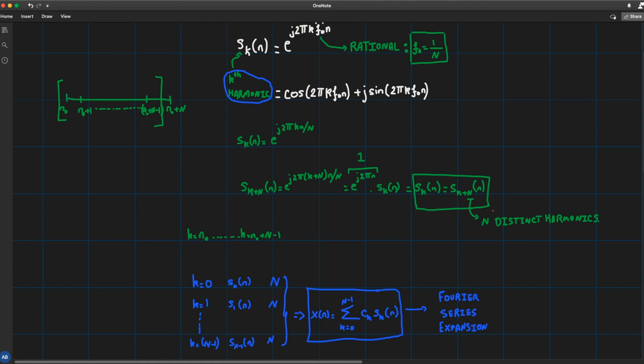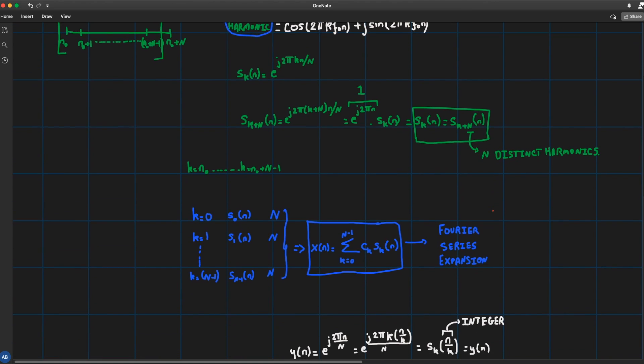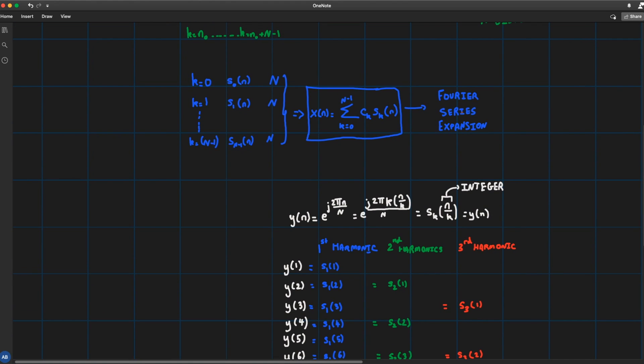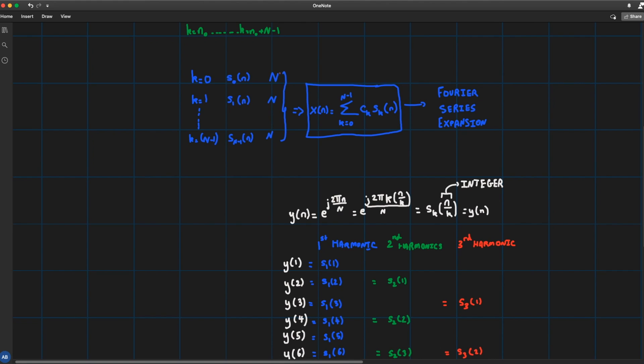And this turns out to be useful to write down the Fourier series expansion of any discrete time periodic signal x(n). Because if let's say my x(n) has a fundamental period N equal 3, then I choose my N over here to be 3 thus I have harmonics going from s₀ to s₂. So s₀, s₁, s₂.